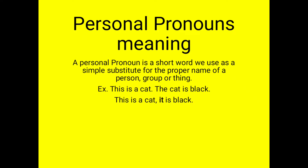A personal pronoun is a short word we use as a simple substitute for the proper name of a person, group or thing. For example, this is a cat. The cat is black. Now here we use a substitute for the cat: this is a cat, it is black. So we can say that 'it' is a personal pronoun.